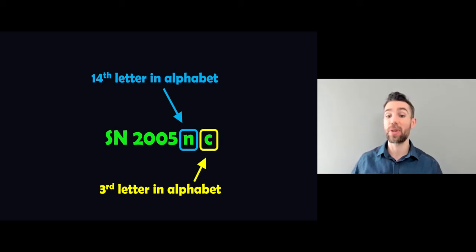So N is the 14th letter of the alphabet, which means it's gone through 14 times. And then the one on the end here, the C, that's the third letter in the alphabet. So that means that on the final alphabet, you're in the third position. So you need to basically do 14 times 26 and then add the three. And that will give you the number of discovery in that year for that supernova.